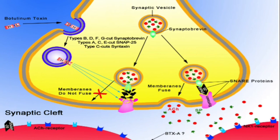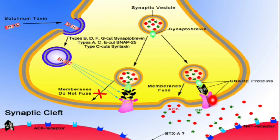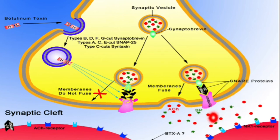I also want to remind you about the SNARE proteins, which include syntaxin, synaptotagmin, and synaptobrevin. SNARE proteins allow the fusion of synaptic vesicles — which contain the neurotransmitter — with the pre-synaptic membrane. Upon fusion, there is exocytosis of acetylcholine into the synaptic cleft, causing muscle contraction. However, when botulinum toxin is present, it destroys the SNARE proteins, so the membranes cannot fuse.